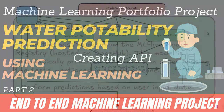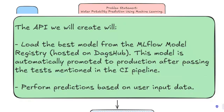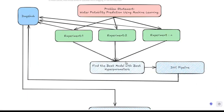The API we will create will load the best model from the MLflow model registry hosted on Daxup. This model is automatically promoted to production after passing the tests mentioned in the CI workflow. After that, we are going to perform predictions based on the user input data. Let's get started by creating an API for our Water Potability Prediction project.